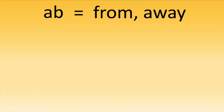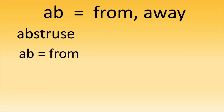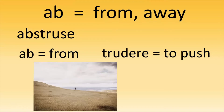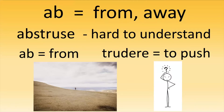Our next prefix is AB and this means 'from' or 'away.' Our first word is 'abstruse.' This comes from AB and 'trudere,' which in Latin means to push. Imagine pushing something very far away from you — the farther away it is, the less you can make it out. That's because this word means hard to understand. Imagine something being pushed so far away that you can barely even see it, meaning it's very hard to understand.